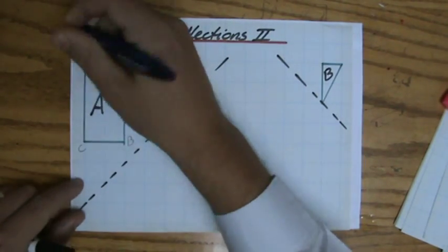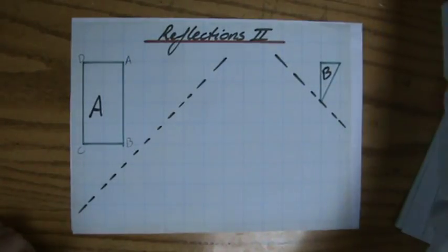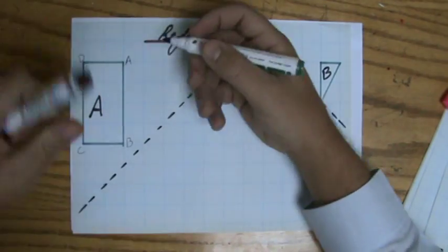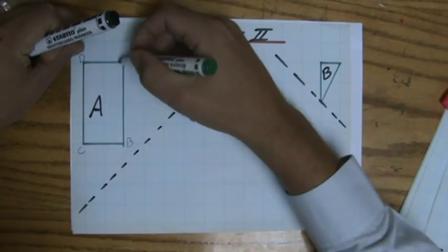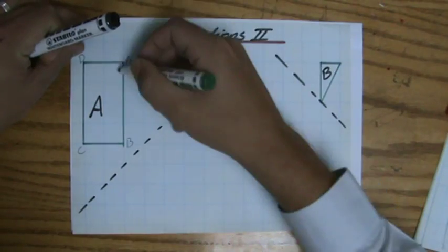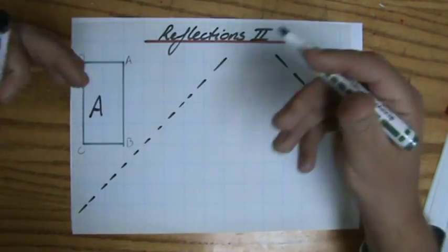Let me put some letters at the vertices: A, B, C, D. I'll do point A first. I'm going to my mirror line. I can go horizontally or I can go vertically to my mirror line, it doesn't matter.